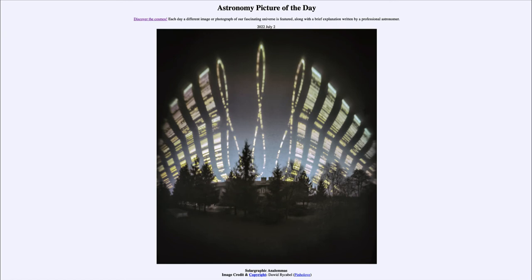You also notice some gaps in the image — areas where the sun's image was not captured — and that would be because of cloud cover. If it was cloudy, you might not be able to get an image of the sun at that specific time. You can see some large dark gaps where it would have been relatively cloudy for a number of days.